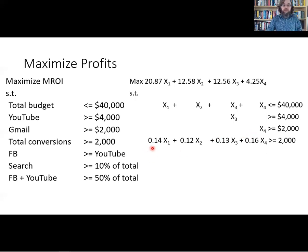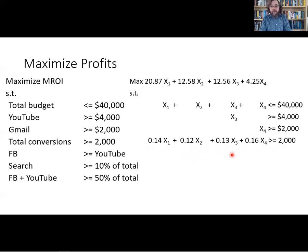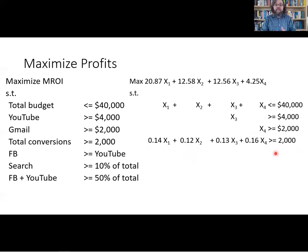The total number of conversions has to be at least 2,000. To find the number of conversions, we take the amount spent on each category and multiply that by the number of conversions received per dollar spent on advertising. That's how we ensure we get at least 2,000 conversions. All of those constraints are pretty straightforward.